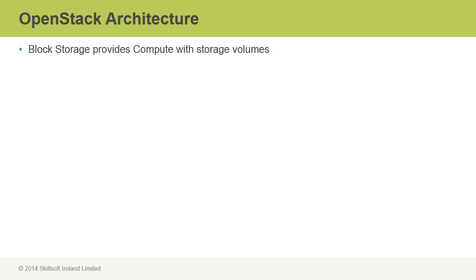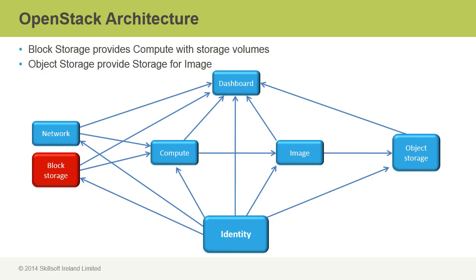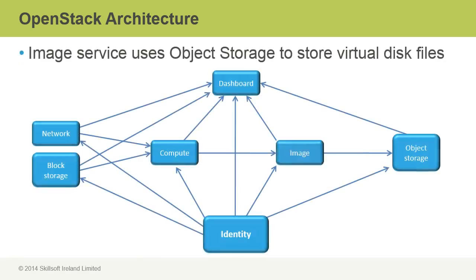There are two types of storage components in OpenStack: block storage and object storage. Block storage works directly with compute to provide storage volumes for the use of the VMs being executed in compute. Object storage stores the images for the image service. There are others that can be used, but most of the time it's object storage that provides the repository for images.